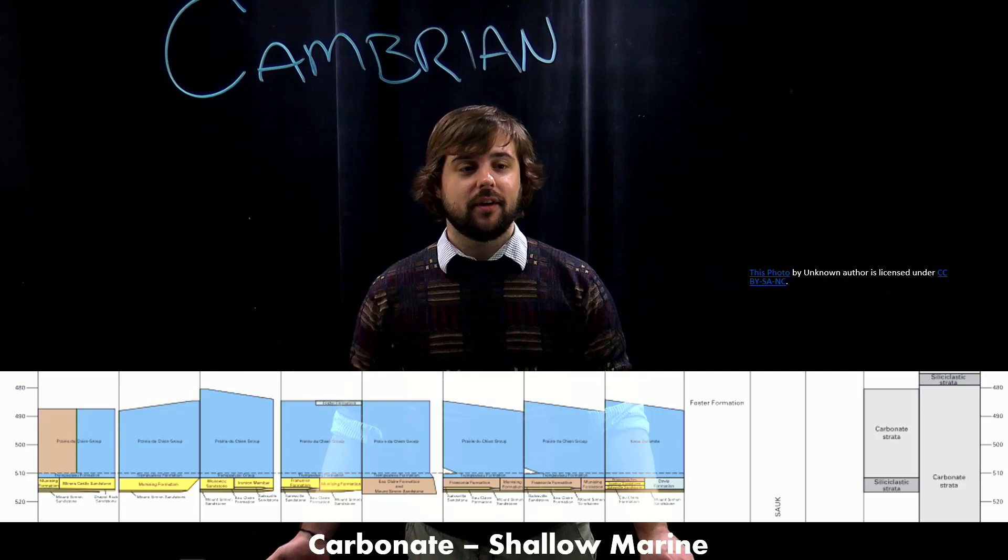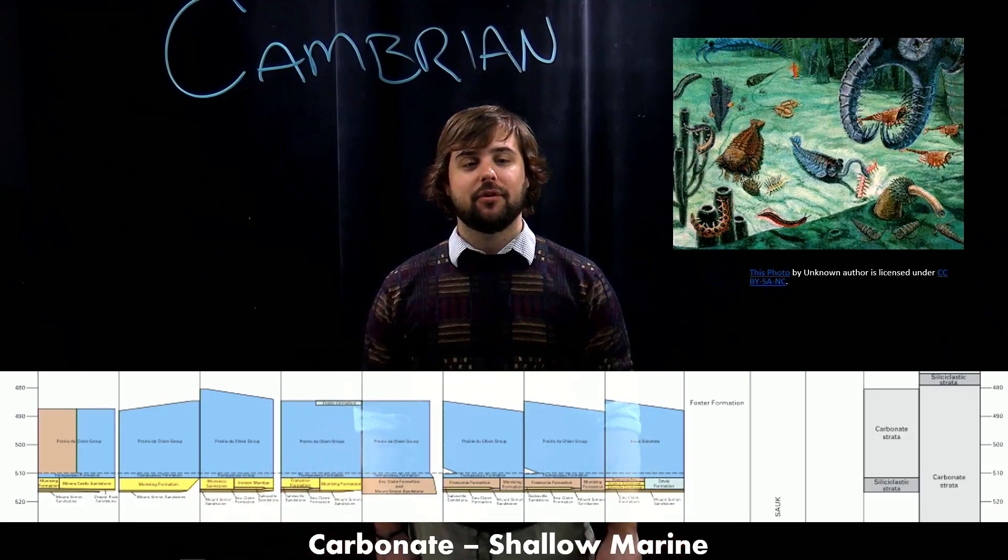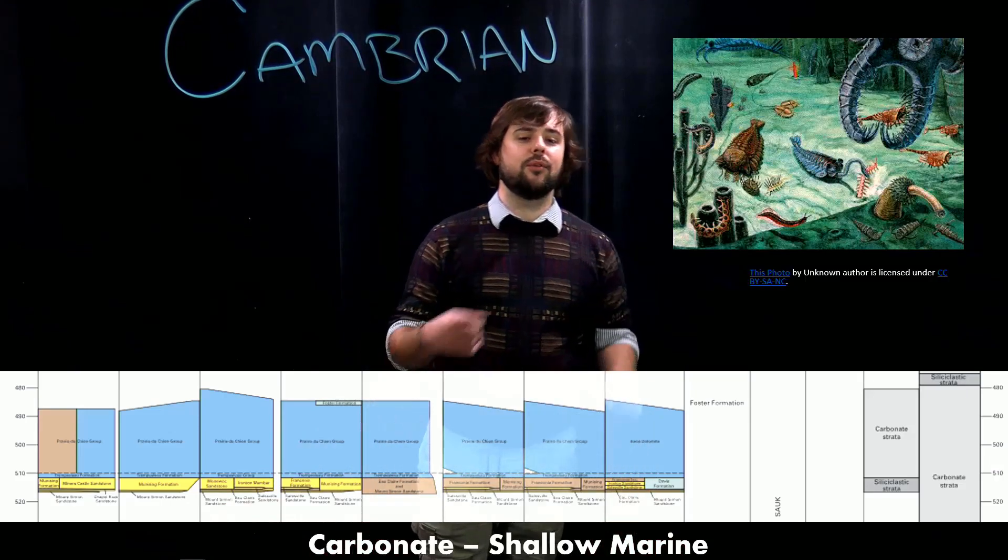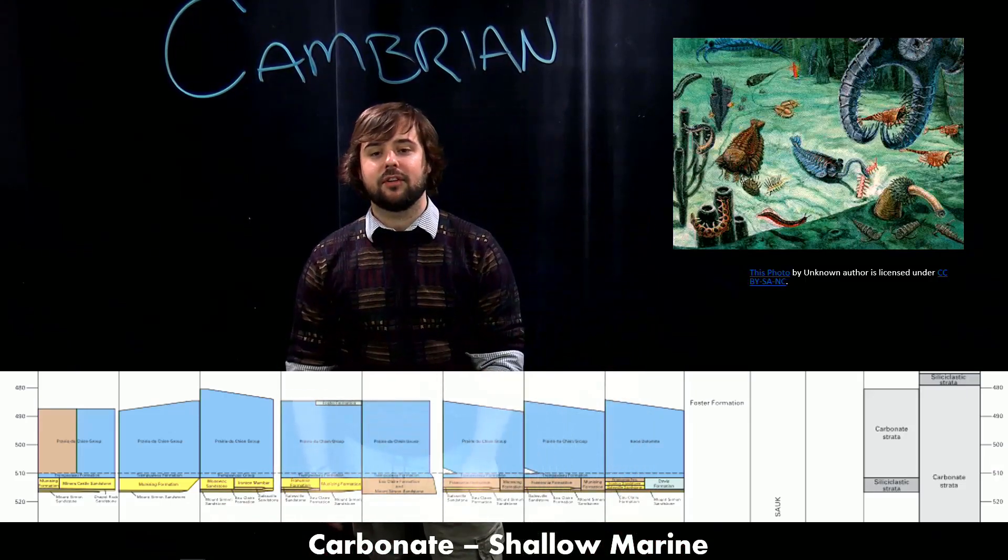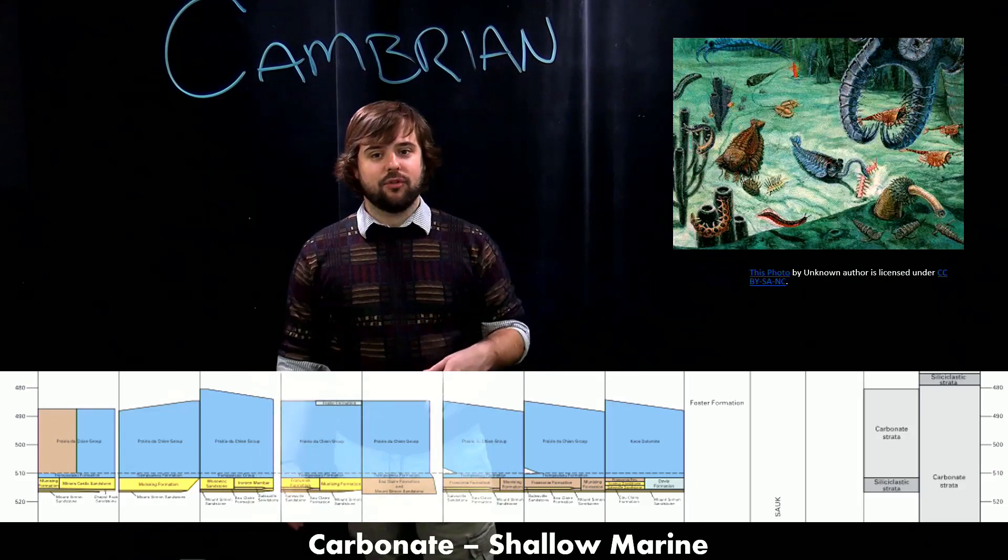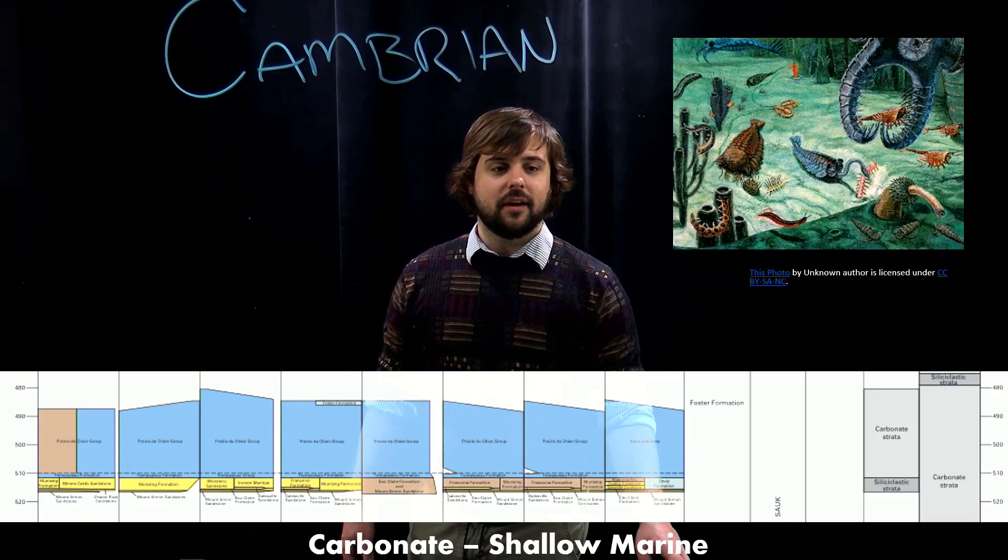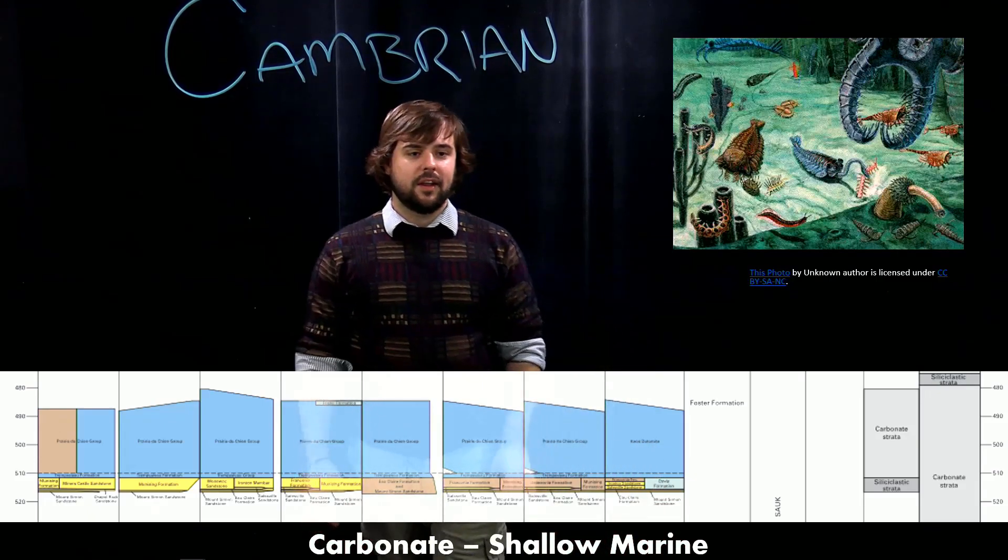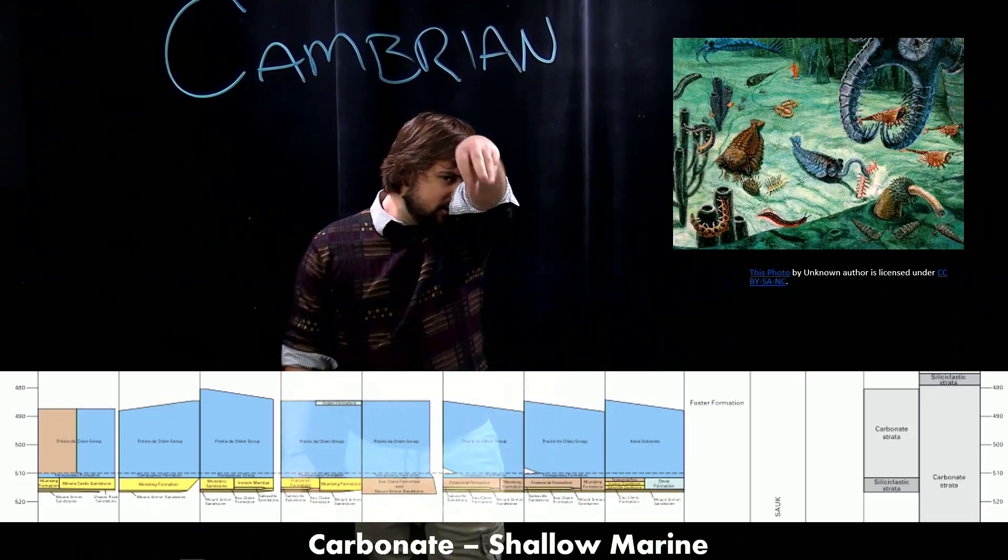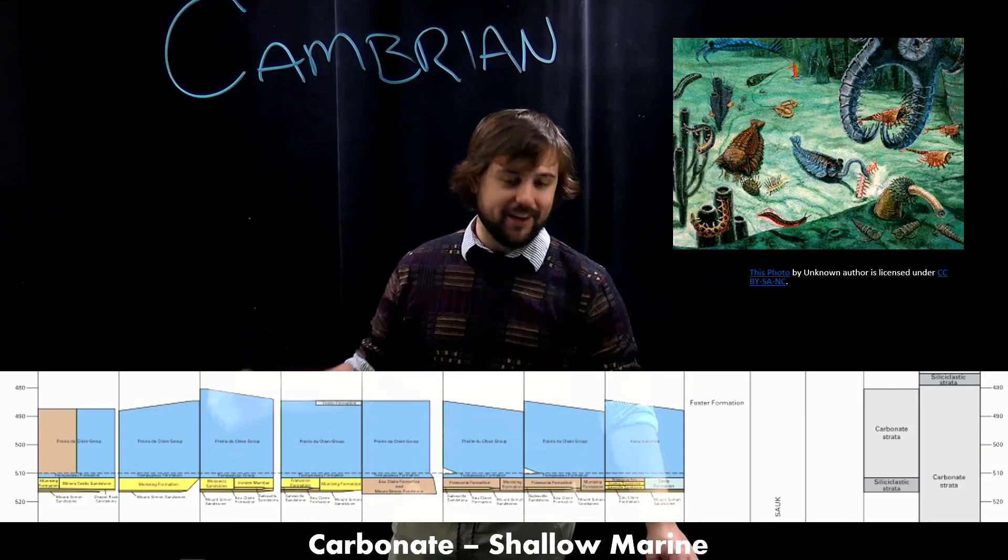So if you wanted to use your imagination and maybe try to see what the Cambrian looked like in Michigan, I would look to the classic illustration of a Cambrian menagerie of animals. You've got trilobites. You have the anomalocaris. You have the weird snappy nose things. And as well as many other corals too.